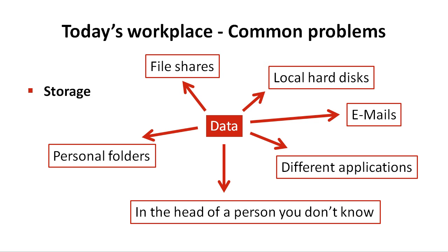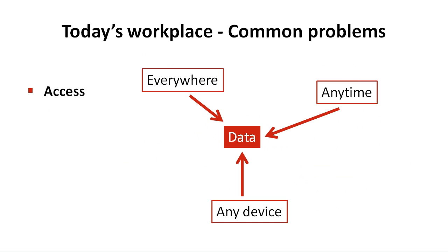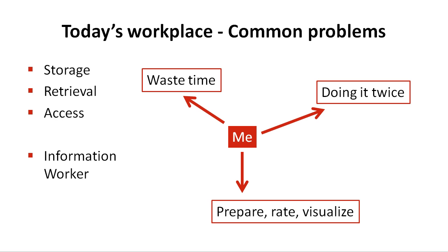Another problem is the retrieval of information. Does it exist? Does it exist more than once? Is it relevant? I don't need hundreds of search results if only five of them are important for me and my work. The access is also a problem. I want to have access from everywhere at any time using any device. So how should I make a decision if I can't find, use or access the information I need?